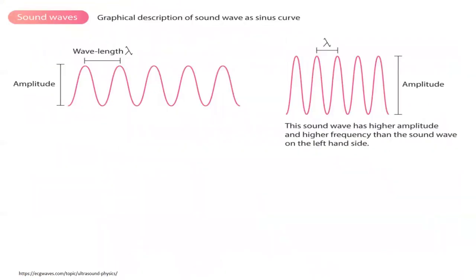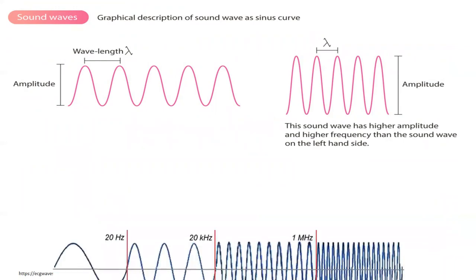If we want to graphically describe the sound waves, we use sinus curves showing wavelength and amplitude. On the right-hand side of the panel, we can see a sound wave with higher amplitude and higher frequency than the sound wave on the left-hand side.